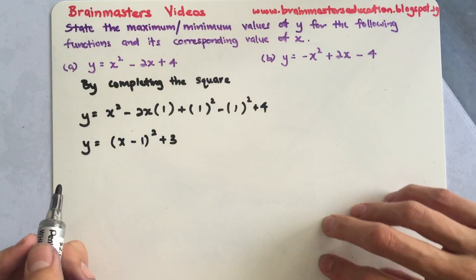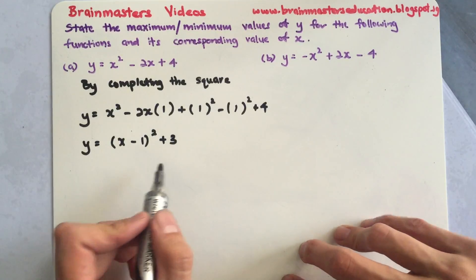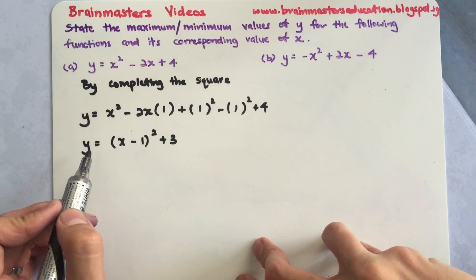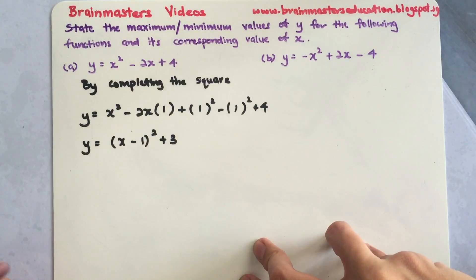After completing the square, this is what I have. This is the equation originally, by changing it into the complete the square form. From here we will be able to find our maximum or minimum point.